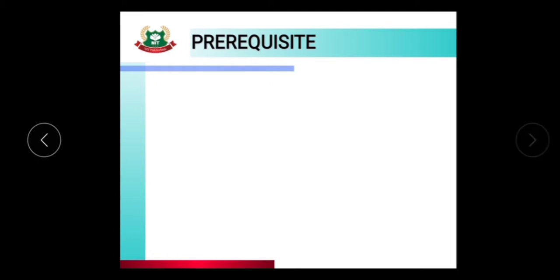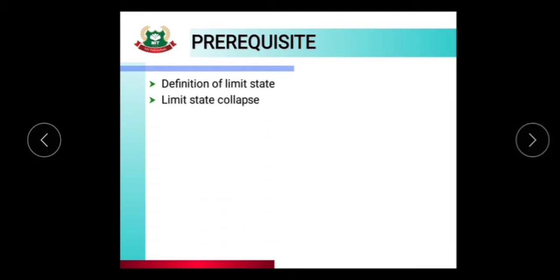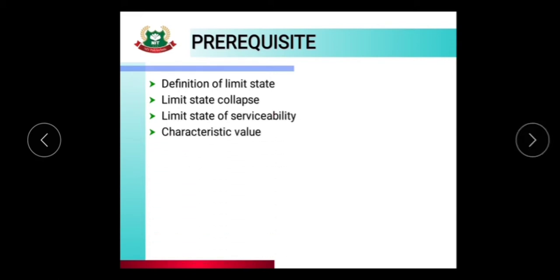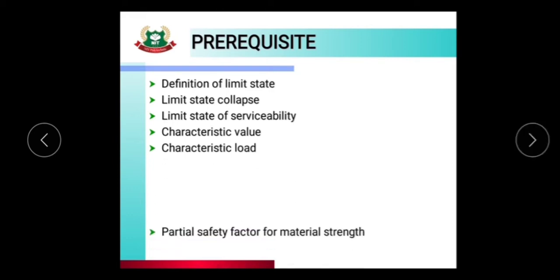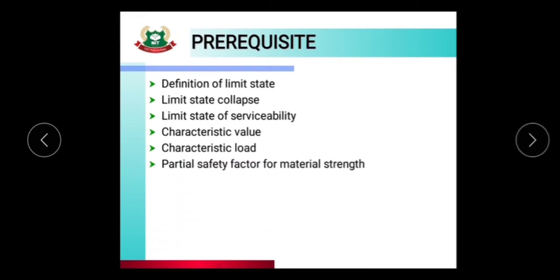In the last video lecture, we learned about the definition of limit state, limit state of collapse, limit state of serviceability, characteristic value, characteristic load, and partial safety factor for material strength.